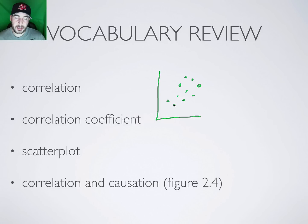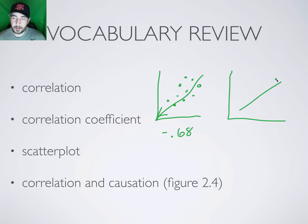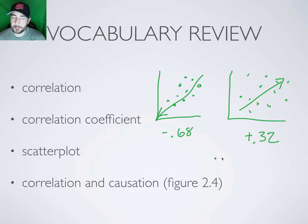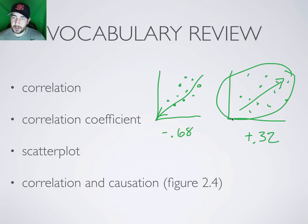You draw a line through the middle of the scatter plot. The closer the data points are to that line, the stronger the correlation. For example, a tightly clustered set going downward might be a negative 0.68, while a more spread-out set going upward might be only a positive 0.32. The tighter the cluster around the line, the stronger the correlation.